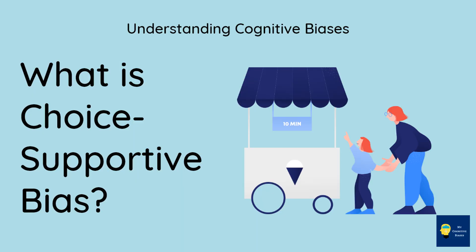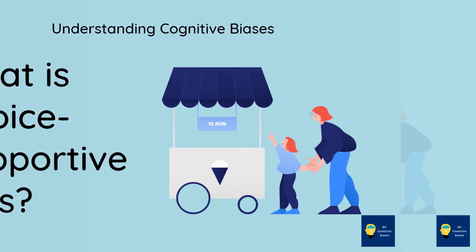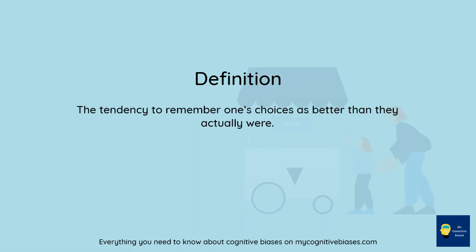What is choice-supportive bias? The tendency to remember one's choices as better than they actually were.